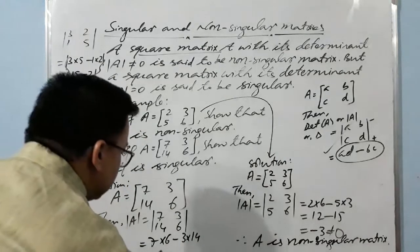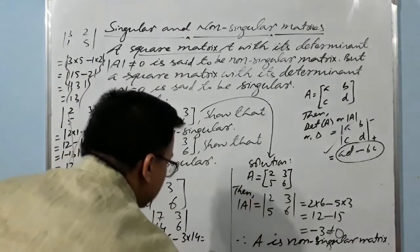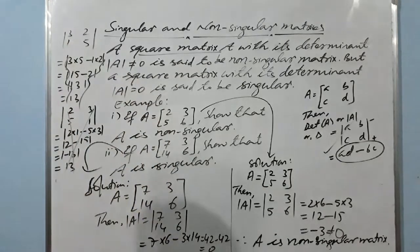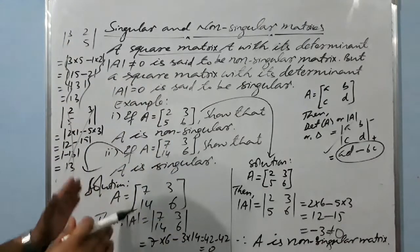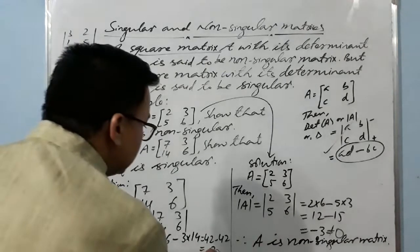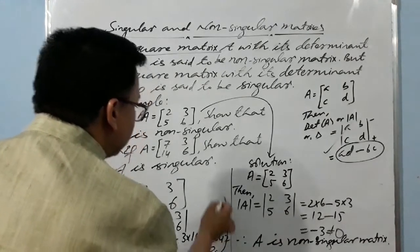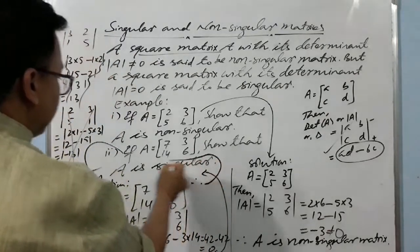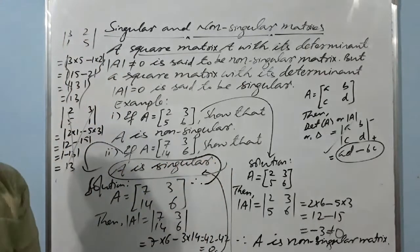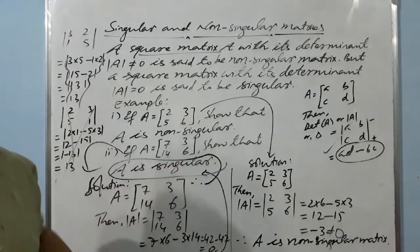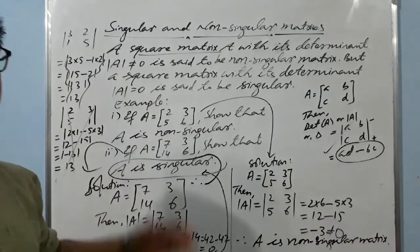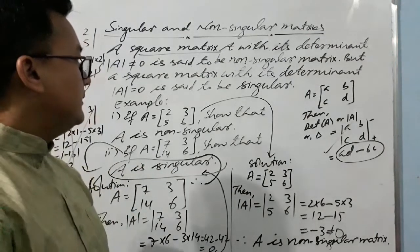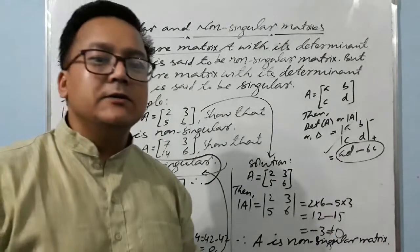Since the determinant equals zero, therefore this matrix is a singular matrix. This is because the determinant is zero. So now it is clear: singular and non-singular matrices are determined simply by whether the determinant equals zero or not.